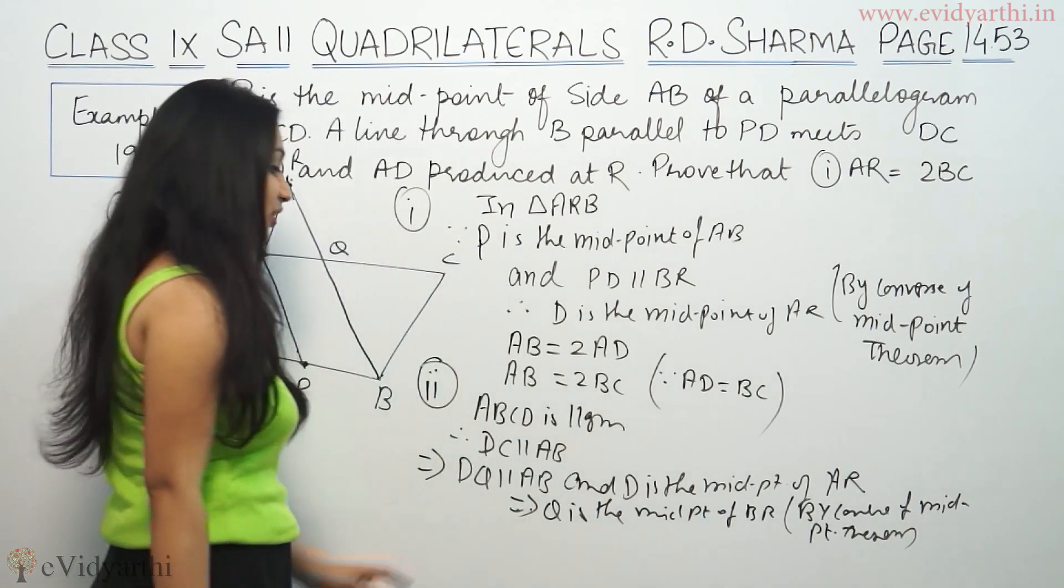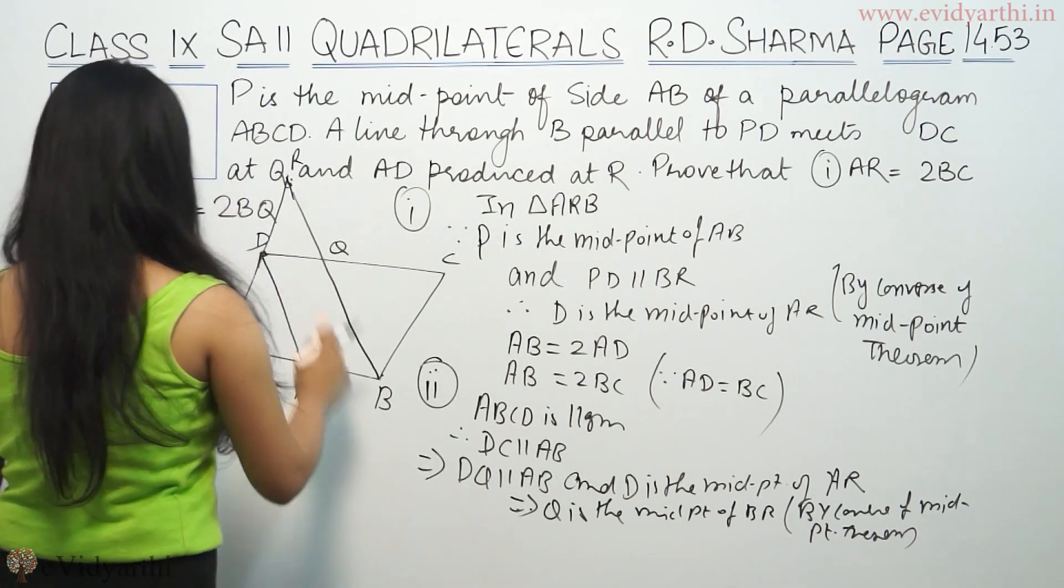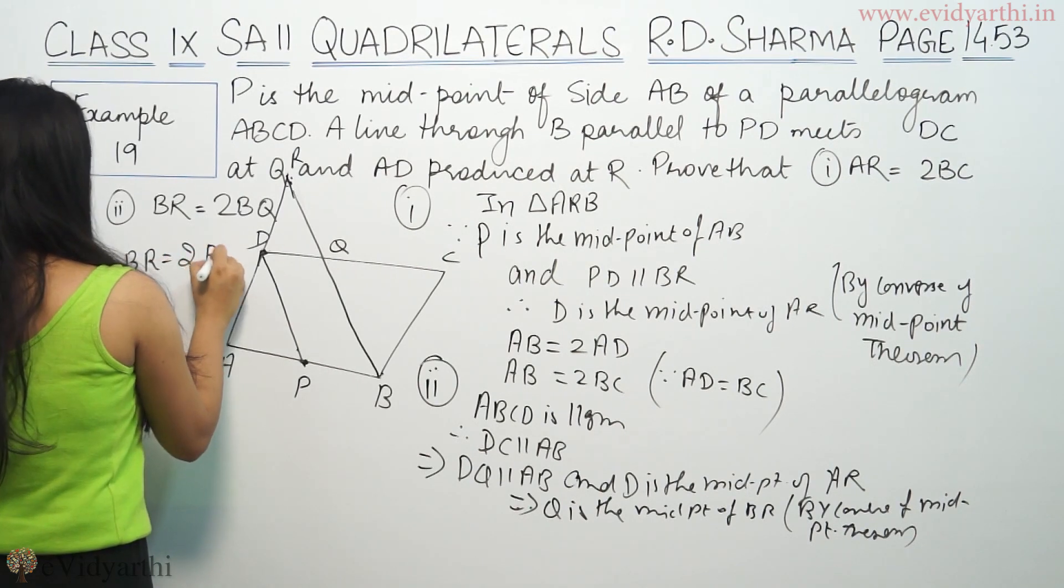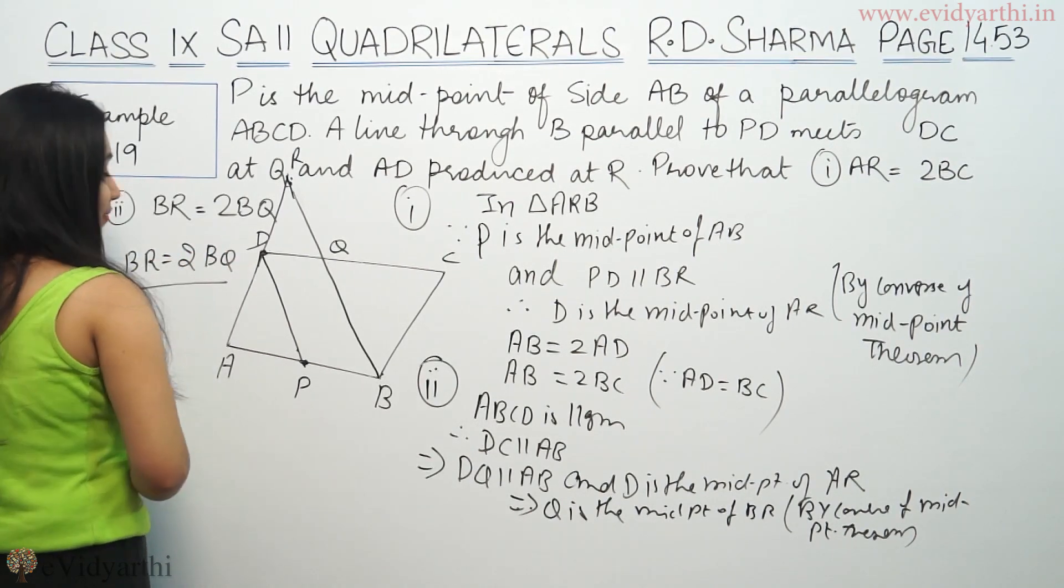By midpoint theorem, Q is the midpoint, which means BR equals twice BQ. We have proved it now.